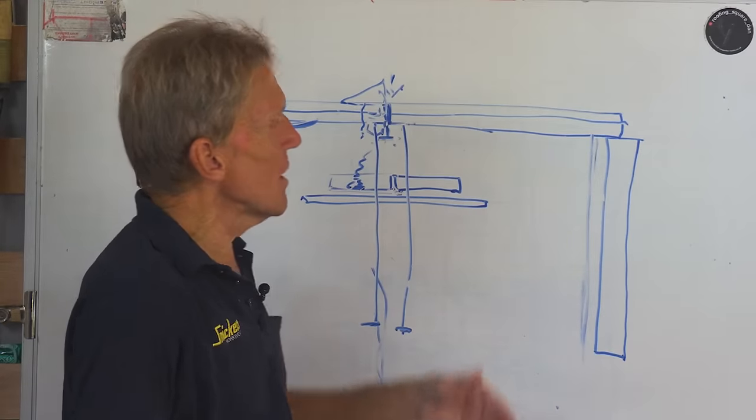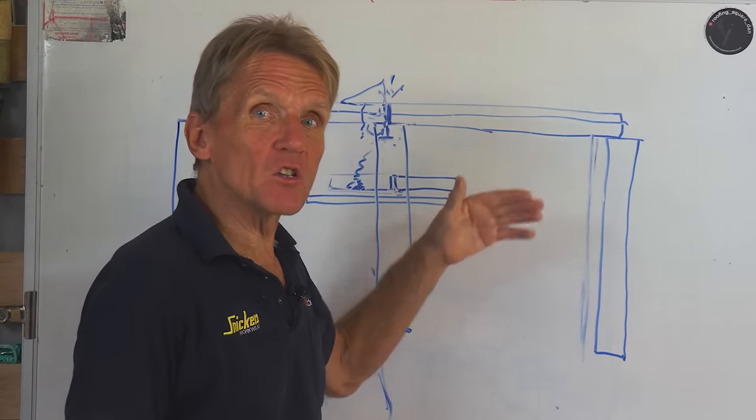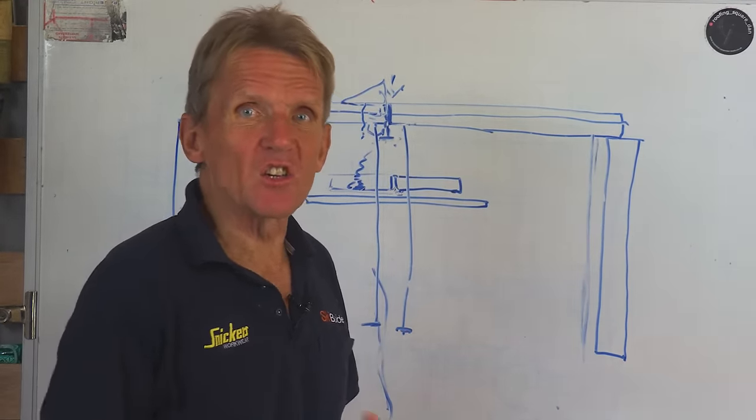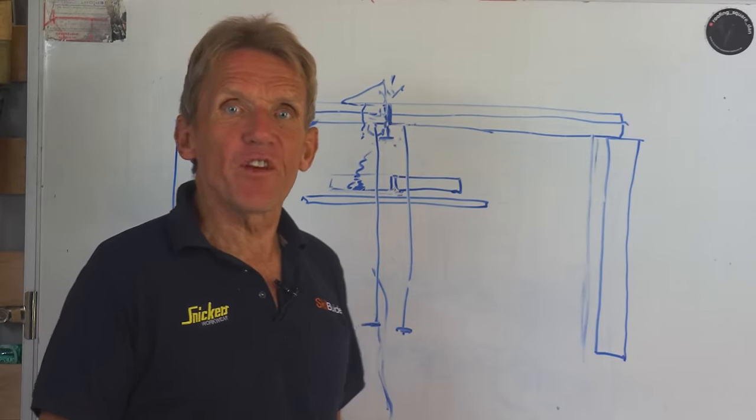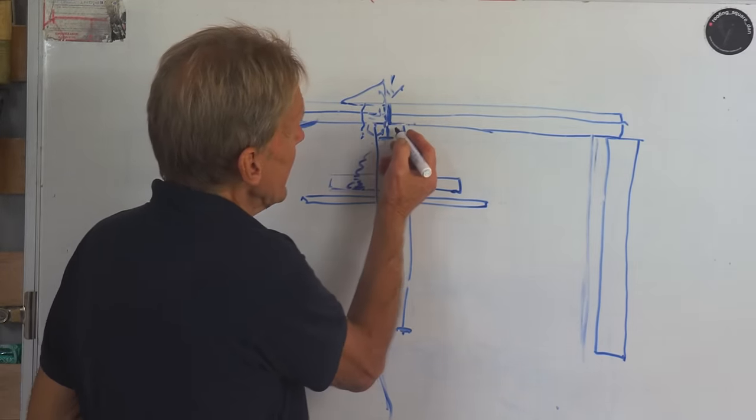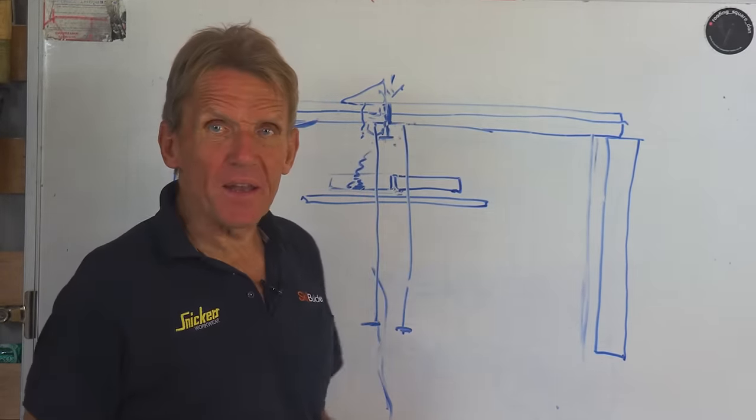And what you often get in those situations when something's expanding and contracting, you also get a bit of creep. So it may be that this beam is physically moving along the way so that that bearing is becoming less and less. And that would be another contributing factor.